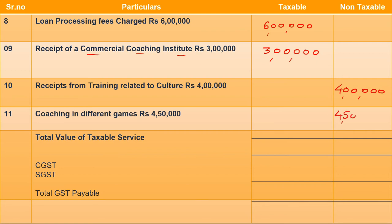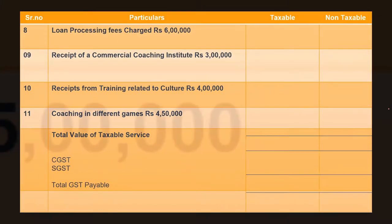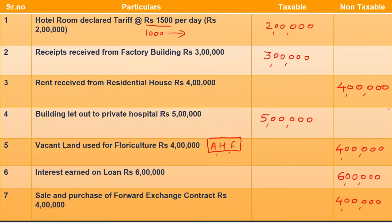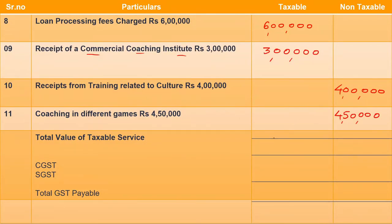Point 11: coaching in different games — this is also non-taxable, ₹4,50,000 will be non-taxable for us. Now the calculation is quite simple. We will total the taxable amounts first — no need to total the non-taxable. ₹6,00,000 + ₹3,00,000 = ₹9,00,000; + ₹2,00,000 = ₹11,00,000; + ₹5,00,000 = ₹16,00,000; + ₹3,00,000 = ₹19,00,000. Total taxable column = ₹19,00,000, which we call total value of taxable service.